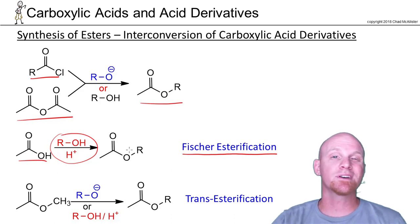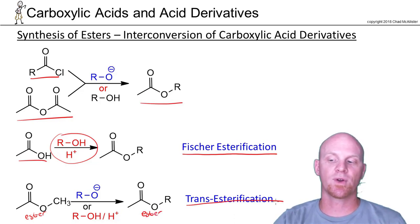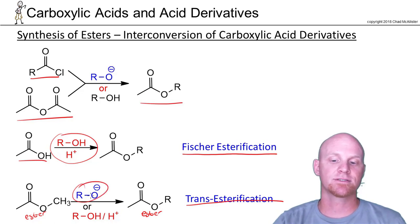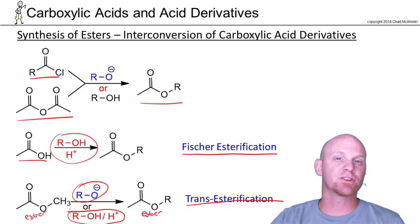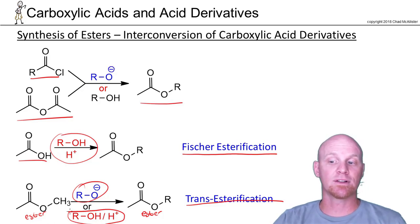Finally, there's no real place for me to put this on the chart, but you can turn one ester into a different ester in what's called a transesterification reaction. This can be base catalyzed with a strong nucleophile, or it can be acid catalyzed as well. It's just an ester making a circle back to a different form of ester. But we are going to spend a little time on that Fischer esterification.